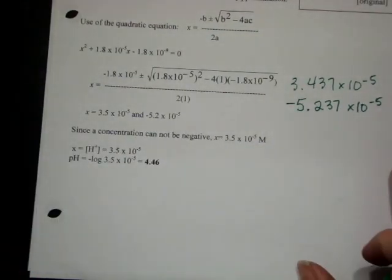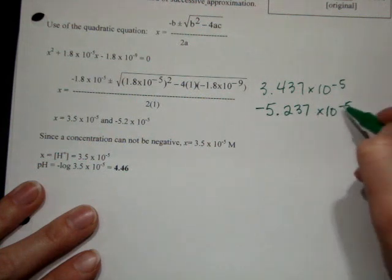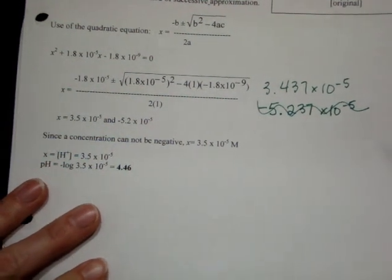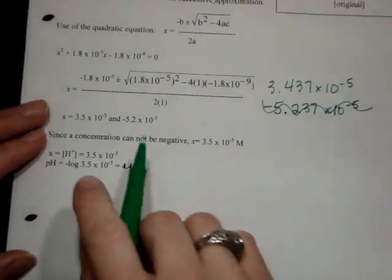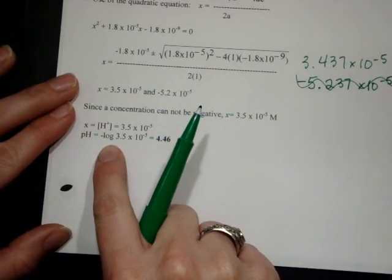Out of my options, I have a positive X and a negative X. I'm not going to use the negative X because we're not going that direction. So I'm going to use that as my X, which is my hydrogen concentration, and then I can find my pH.